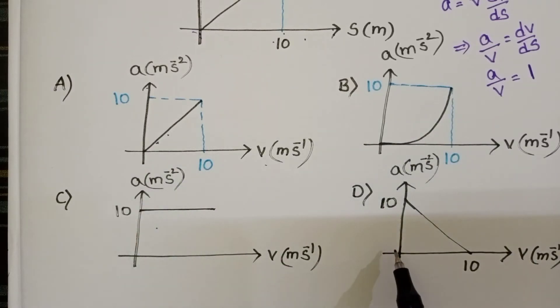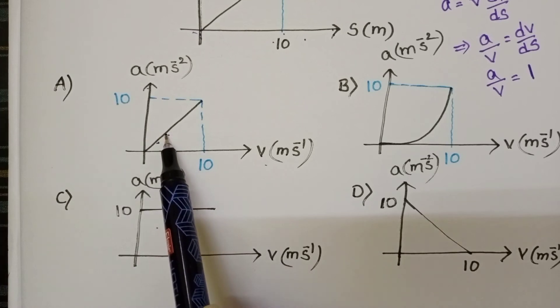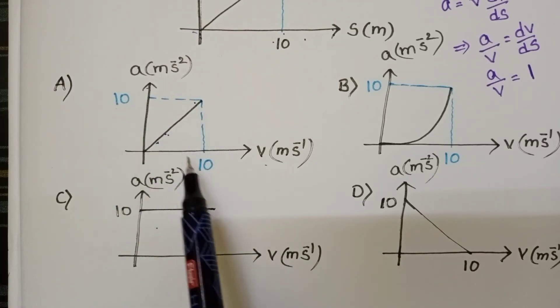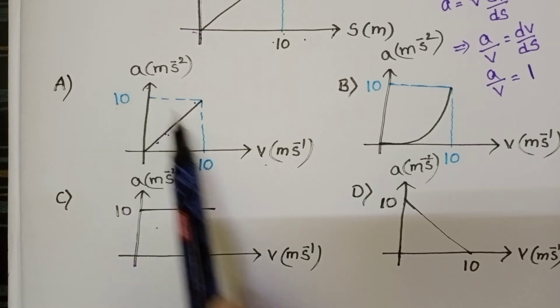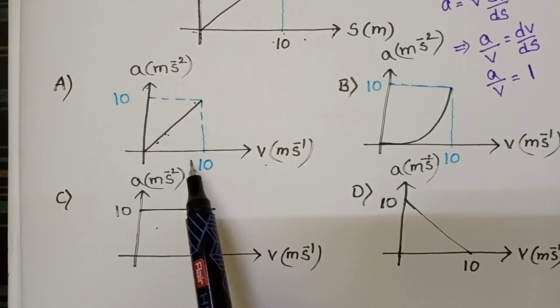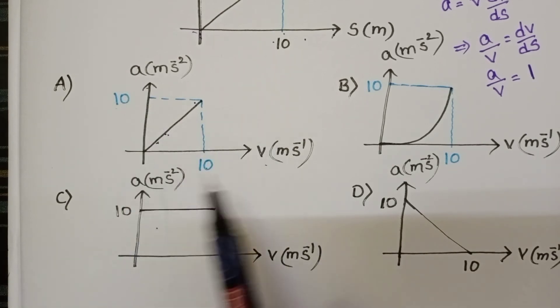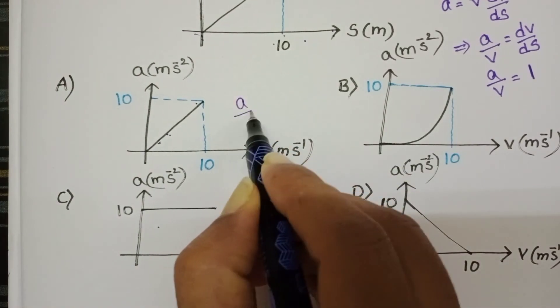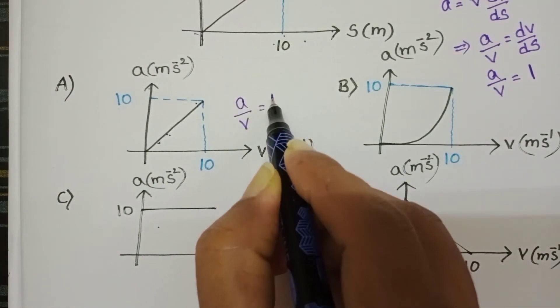In these 3 options, the first option is a straight line. The slope of this graph: a by v equals 10 by 10, which equals 1. So the slope of the graph is 1.